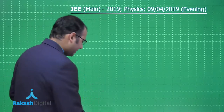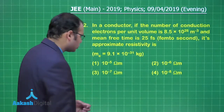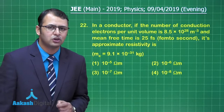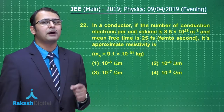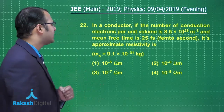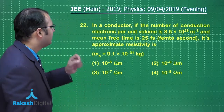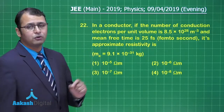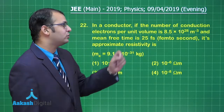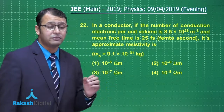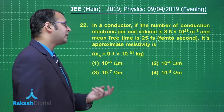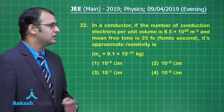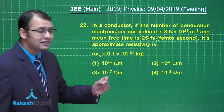Now let's take question number 22. This question belongs to the section of electromagnetism from the chapter current electricity. In a conductor, if the number of conduction electrons per unit volume is given as 8.5×10²⁸ per meter cube and mean free time is 25 femtoseconds, its approximate resistivity is...